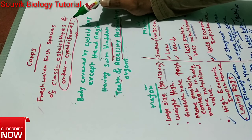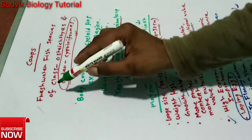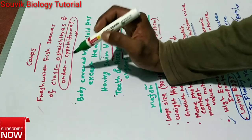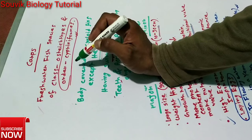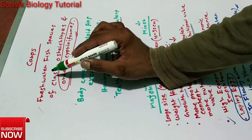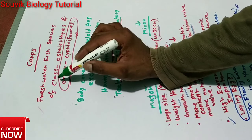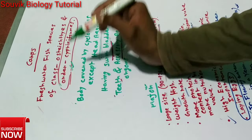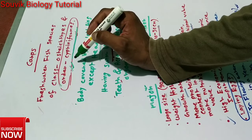Now, what are carps? The types of carps and the basic differences between major carps and minor carps. Carps are the freshwater fish species of class Osteichthyes and order Cypriniformes. You have to remember the order Cypriniformes.